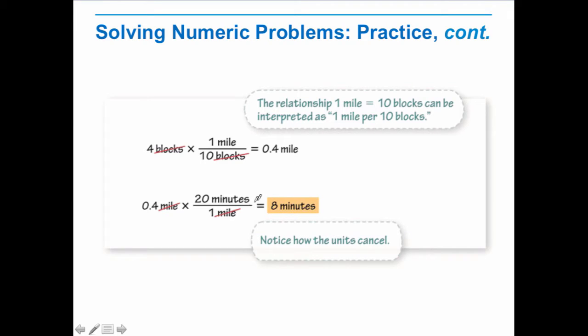One mile per 10 blocks. If we had miles, we would flip this term. Next thing we want to do is convert our miles into minutes. Since we know one mile is the same as 20 minutes, based on our information on the previous slide, we take our 0.4 miles. Notice that our miles are canceled out, and then we're left with minutes. Our answer is 8 minutes.